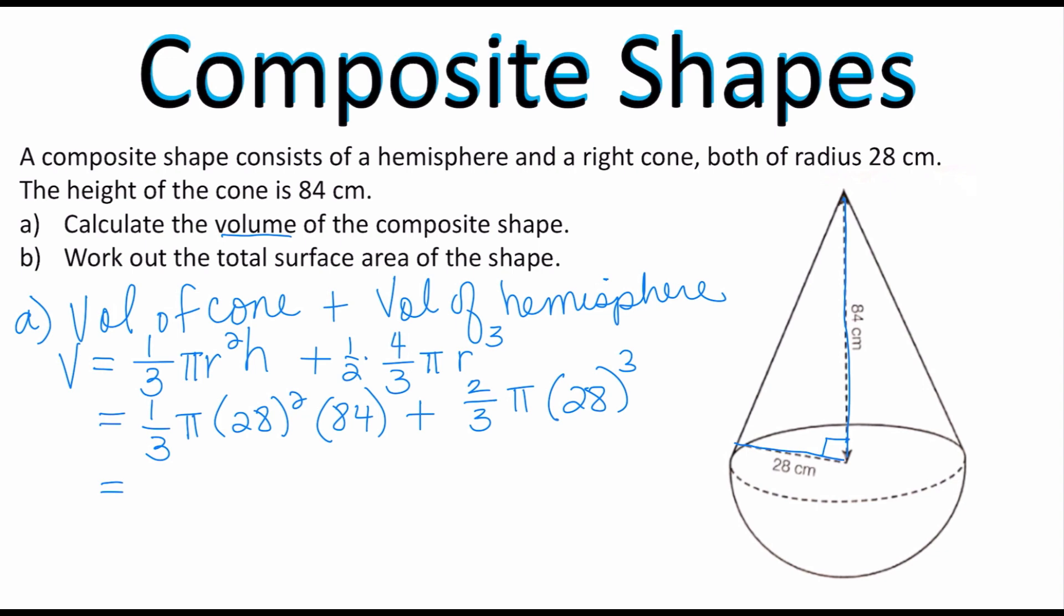Now all of this is going to go straight into your calculator so let's multiply: (1/3) times π times 28² times 84. So this is going to give me 68,964.2419 etc. Plus the second part which is the volume of the hemisphere is going to give me 45,976.16129.